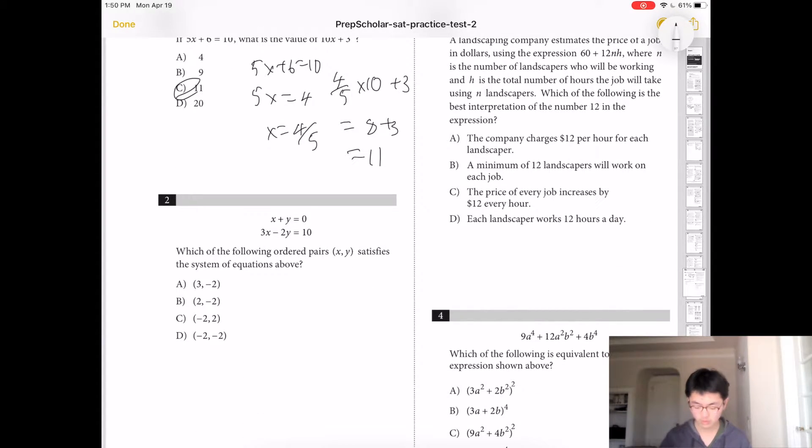Number 2, which of the following ordered pairs satisfies the system of equations above? So x plus y equals 0, and x minus 2y equals 10. So y would be negative x, because you can just flip the x over. So this equation changes to 3x minus 2 negative x equals 10. So 5x would be 10, making x equal 2. So the answer would be B.